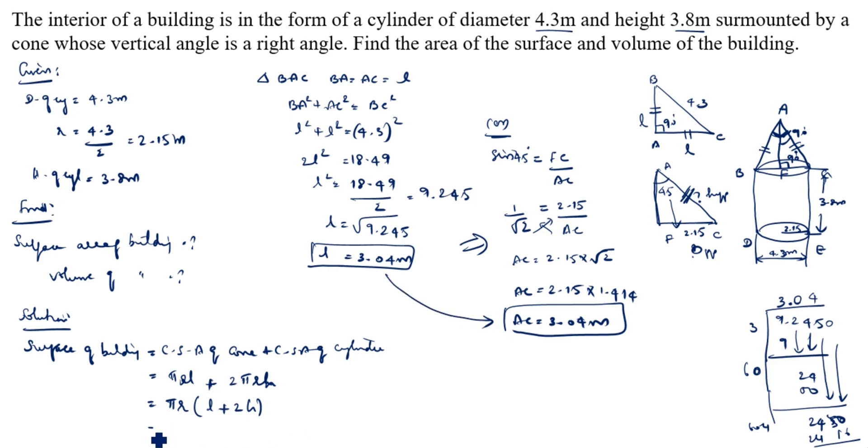You see this or this, both value is same. Now we will calculate. Pi value 22 by 7, r value we know 2.15, L value now only we got 3.04, 2 into H is 3.8. 22 by 7 into 2.15 into bracket of 3.04 plus 7.6. 22 by 7 into 2.15 into 10.64. What is the answer? 71.896, approximately 71.9 meter square. This value 71.9 meter square.